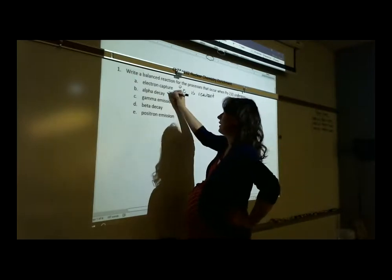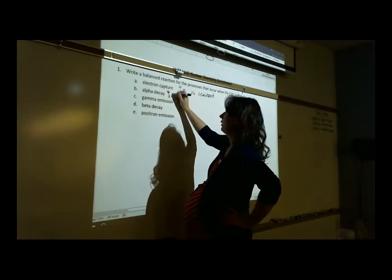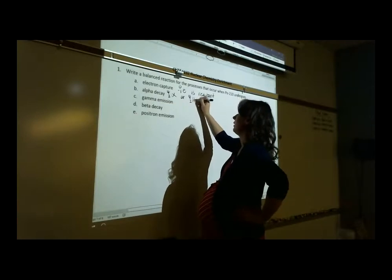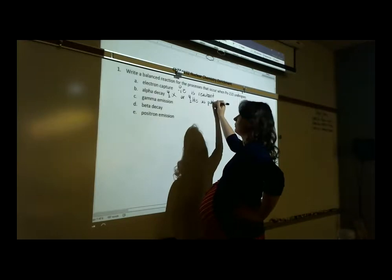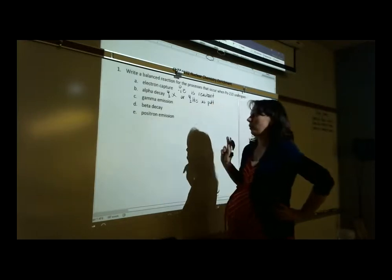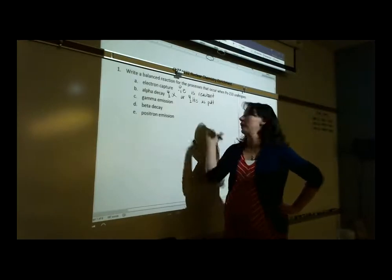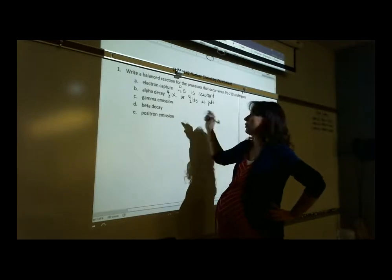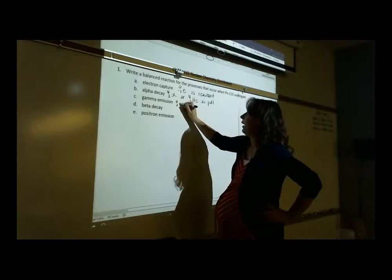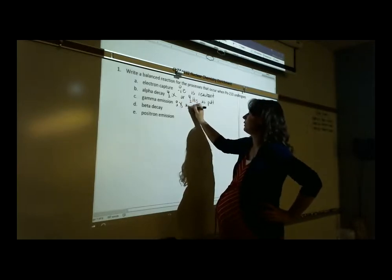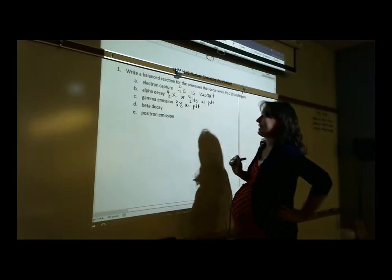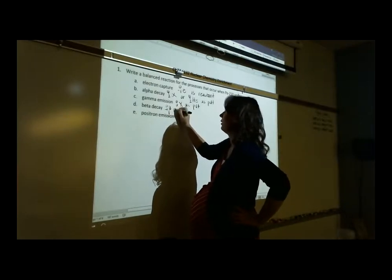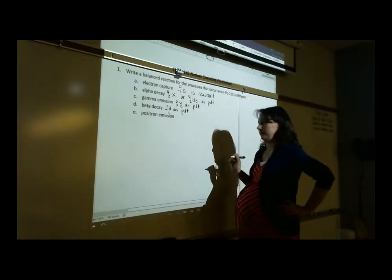What's being produced as a product in electron capture? An alpha particle, which is the same thing as helium — you can write it as ⁴₂α or ⁴₂He; the alpha particle and helium atom are the same thing. Gamma emission is the one that does not change the identity. The gamma particle looks like this: zero-zero mass and zero atomic number — just a gamma as a product.